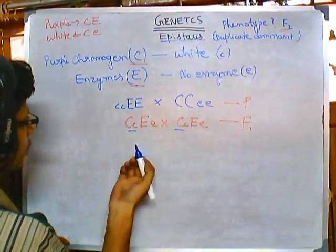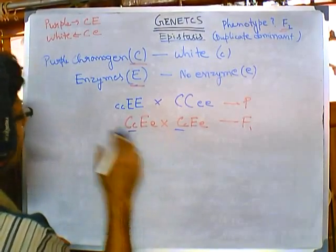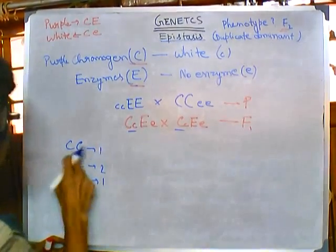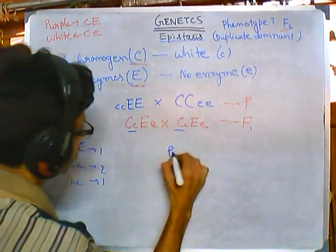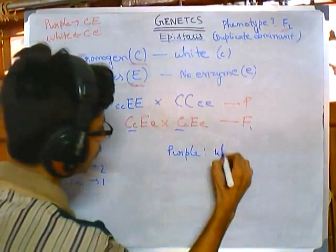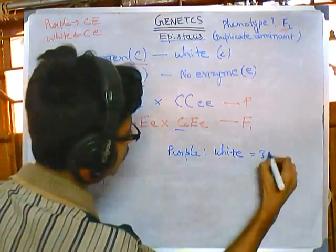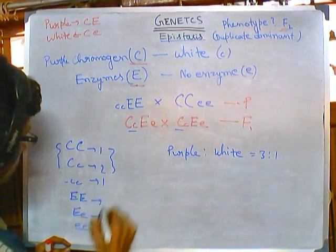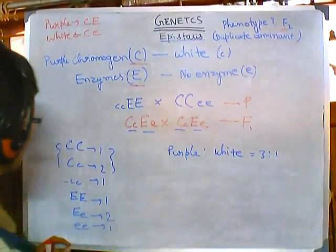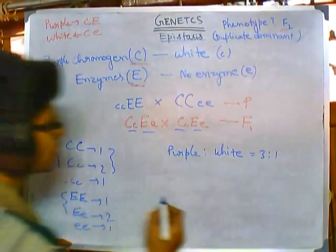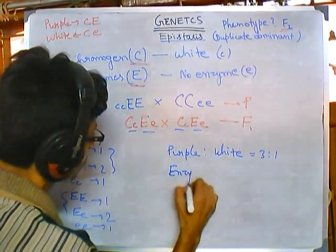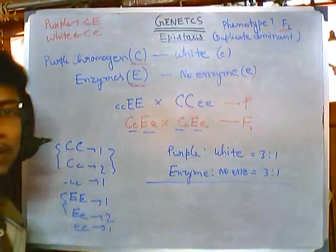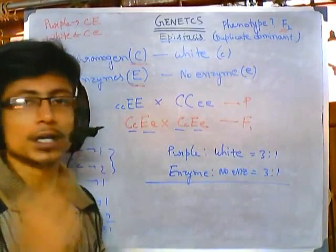In F2, both parents are heterozygous, so the phenotypic ratio for the C locus will be 3:1, giving 1 cap C cap C : 2 cap C small c : 1 small c small c — that's purple to white 3:1. Similarly for the E locus, both heterozygous gives enzyme to no enzyme ratio of 3:1.